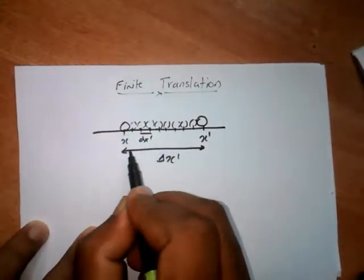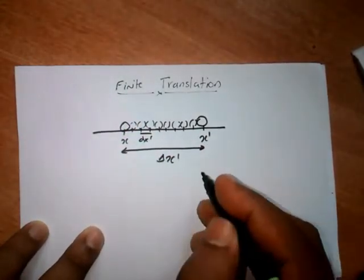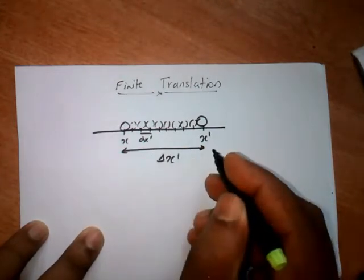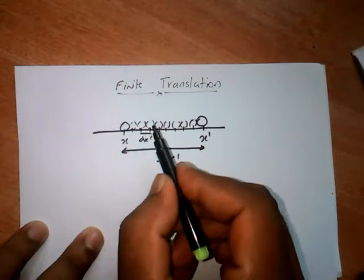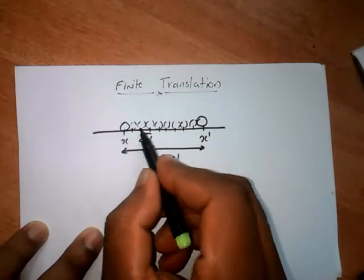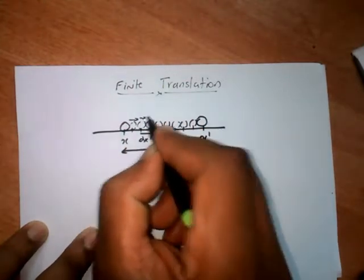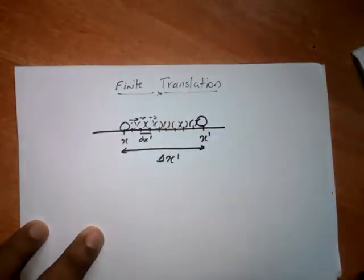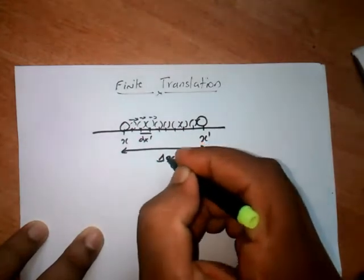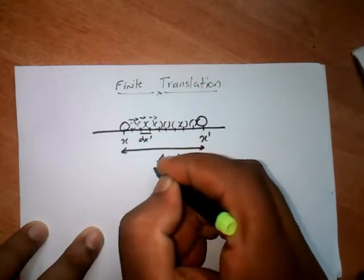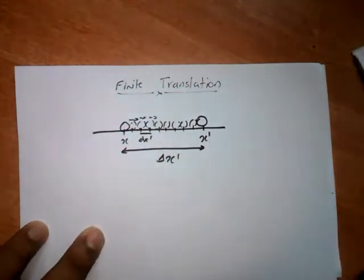So a finite translation to a distance delta x' — that is a spatial displacement by a finite amount — can be obtained by successively compounding infinitesimal translations. This finite translation is made up of compounding or adding infinitesimal translations.